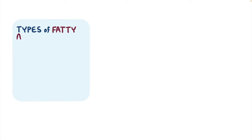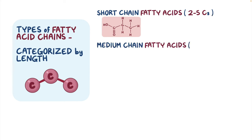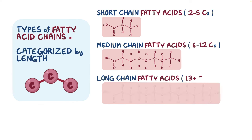Now, there are various types of fatty acid chains, and one way to categorize them is by their length - in other words, how many carbons they have. Short-chain fatty acids have 2-5 carbons, medium-chain fatty acids have 6-12 carbons, and long-chain fatty acids have 13 or more carbons.